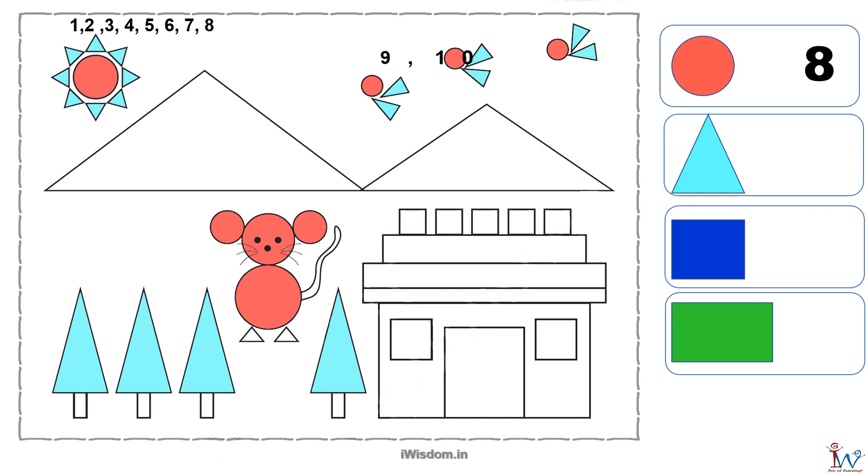Nine, ten, eleven, twelve, thirteen and fourteen. Then there are trees, fifteen, sixteen, seventeen and eighteen. So we have eighteen triangles in total.